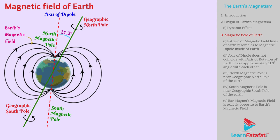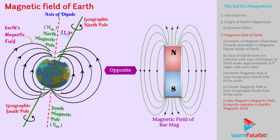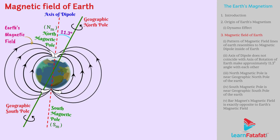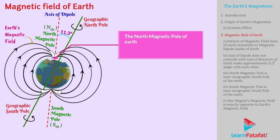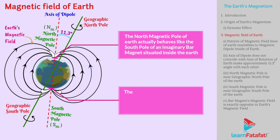Looking at Earth's magnetic field, one would observe that the magnetic field leaves Earth's surface from the South Magnetic Pole and enters Earth's surface at the North Magnetic Pole. This is exactly opposite to the magnetic field of a bar magnet. This convention was given as the North Pole of the bar magnet is assumed to point in the north direction. To avoid confusion, just understand that the North Magnetic Pole of Earth actually behaves like the South Pole of an imaginary bar magnet situated inside the Earth, and the South Magnetic Pole of Earth actually behaves like the North Pole of an imaginary bar magnet.